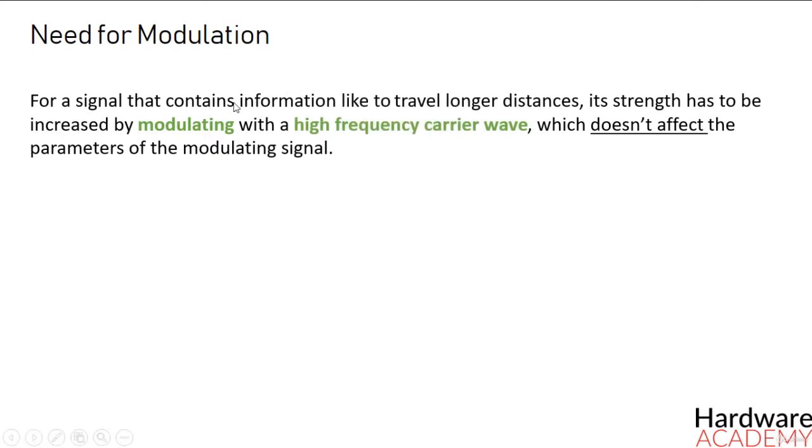So for a signal that carries information to travel long distances, its strength has to be increased by modulating with a high frequency carrier wave which doesn't affect the parameters of the modulating signal.